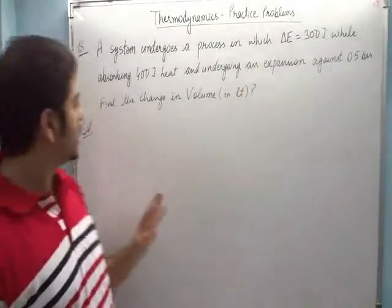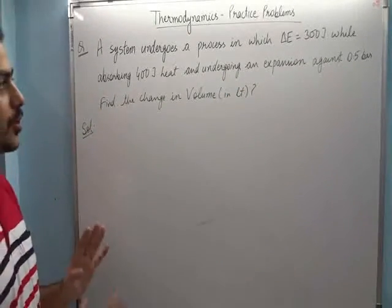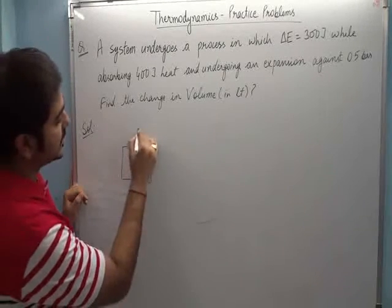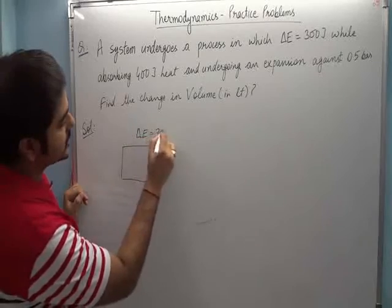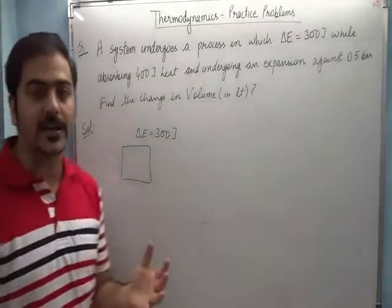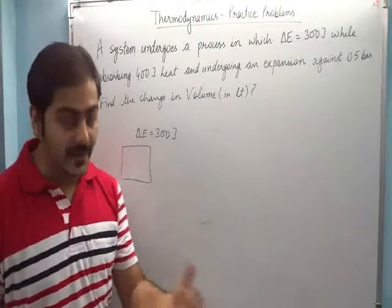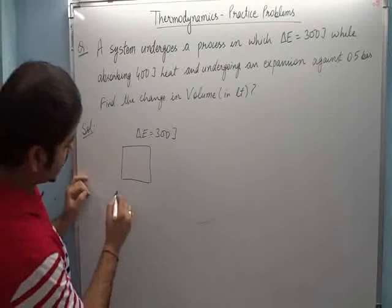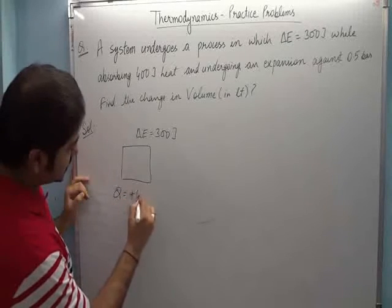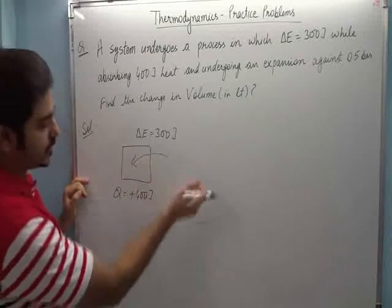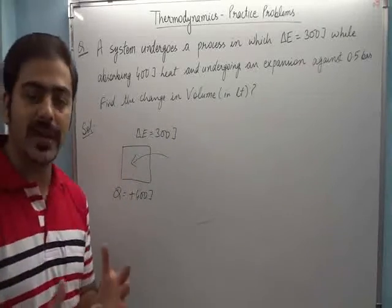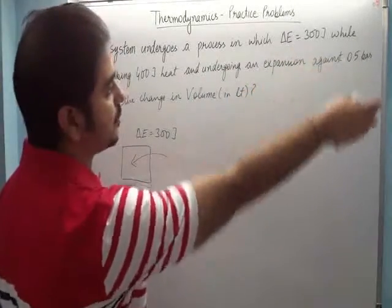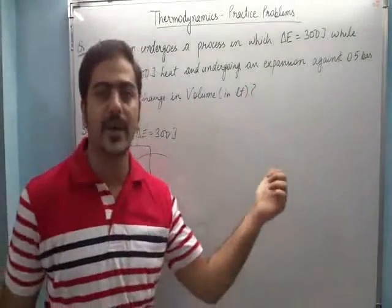Find the change in volume. The question is that a system where delta E is 300, the internal energy is greater than 300 joules. Then absorbing 400 joules of heat, the heat Q, that is plus 400 joules, because the heat absorbed by the system is taken as positive by convention.